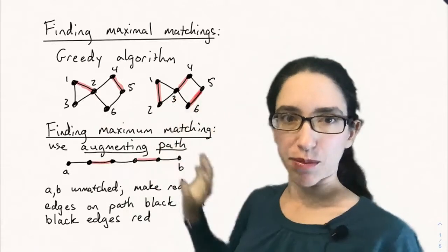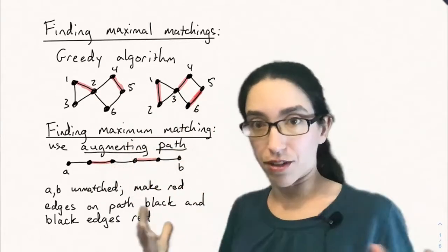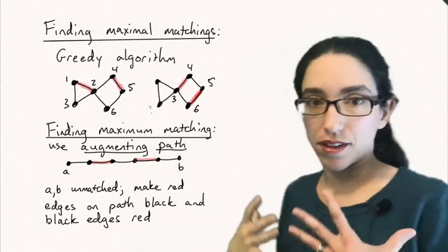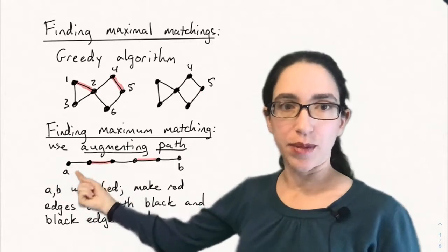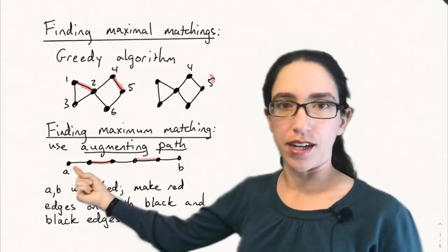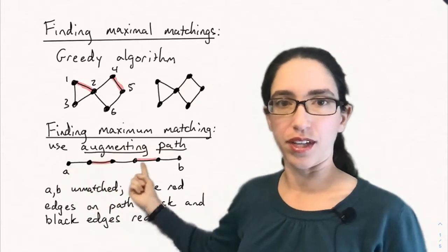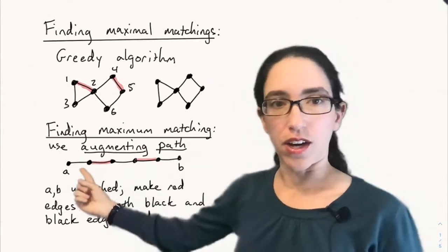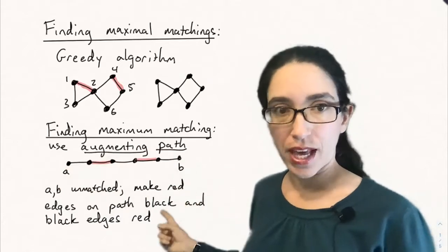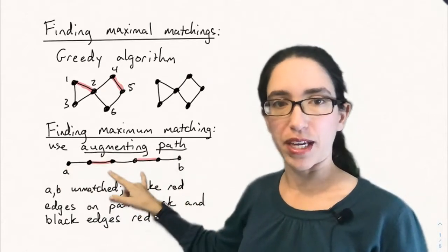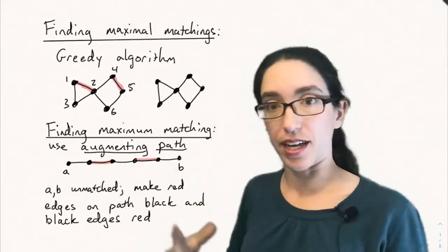Now you can use the maximal matchings to find maximum matchings. There's an algorithm for doing this, and we're not going to cover the entire algorithm, but the idea behind all these algorithms is an augmenting path. So an augmenting path is a sequence of edges that is in the graph that is either not in the matching or in the matching. So out, in, out, in, out. It can continue after that. An augmenting path starts at a vertex A and ends at a vertex B that are unmatched, and then to use this augmenting path to make a bigger matching, you just switch which are the black edges and which are the red edges, and that'll increase the size of the matching by one.